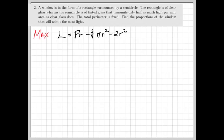Now we have a function L in terms of a single variable R. Remember P is constant. We can take the derivative with respect to R to find our critical point. This gives us our function describing the light through the window in terms of the variable R. Now we need to determine the interval on which R is varying.